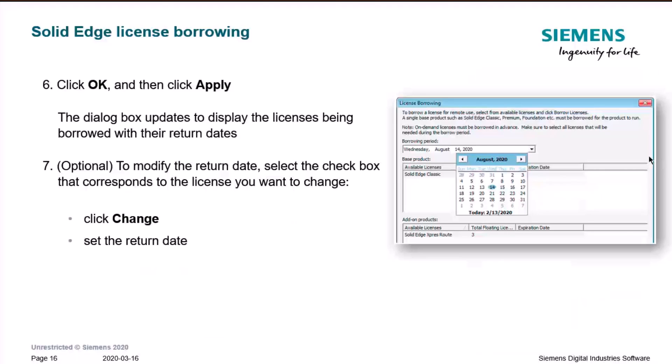Click OK, and the dialog box updates to display the license being borrowed. You can optionally modify the return date. In the current situation, we suggest using the maximum number of days since we don't know the outcome, so you can go for the maximum.